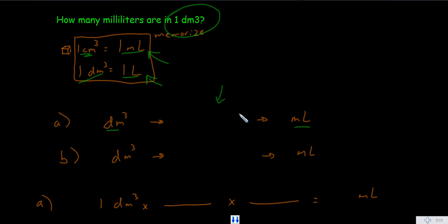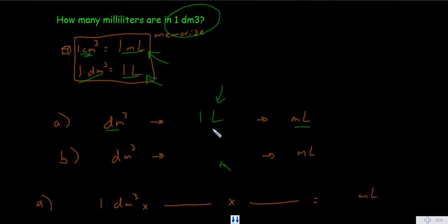You know that one decimeter cubed is the same as one liter, and you can convert from liters to milliliters. In our other option, you can go from decimeters cubed to milliliters via centimeters cubed.